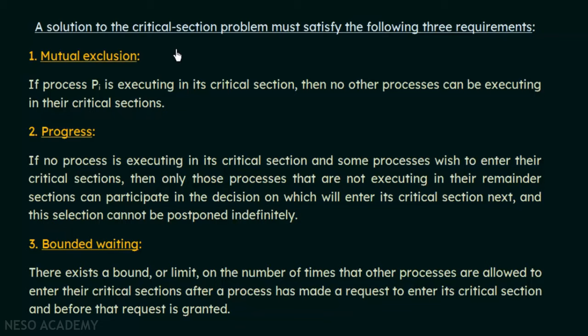The critical section problem is used for synchronizing cooperating processes, and in order to solve it we need to satisfy these three requirements: mutual exclusion, progress, and bounded waiting. This is a very important topic as far as process synchronization is concerned.